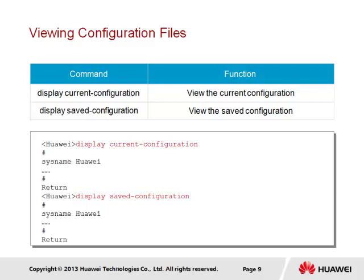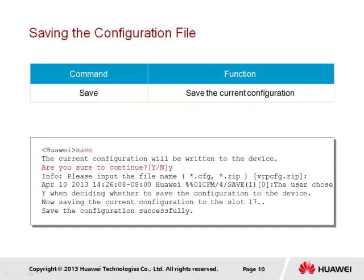We show here the typical result of using these display commands. In order to save the configuration, the save command is used. We demonstrate this command here from the user view, following which the saved configuration will be stored to the default saved configuration file location known as vrpcfg.zip since the file is compressed. If the configuration is to be stored in a file other than the default saved configuration file, the file name of the new saved configuration file should be included after the save command. The save process will prompt for confirmation, to which the yes response should be given to complete the save.